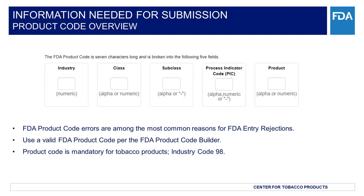Next, we will identify the FDA product code. The product code is mandatory for tobacco products, Industry Code 98, and it is designed to tell FDA what type of product is being imported. FDA provides the product code builder tool and tutorial, which can be used to build the product code. The product code consists of the following. Industry Code: this element is two numbers from 02 to 98; an industry code determines the broadest area into which a product falls — tobacco products fall under Industry Code 98. Class Code: this element is always alpha or numeric and is directly related to an industry; for tobacco products, it designates the category of the product. Class is more specific than an industry code. Some examples of tobacco class codes are cigars, cigarettes, ENDS, etc.